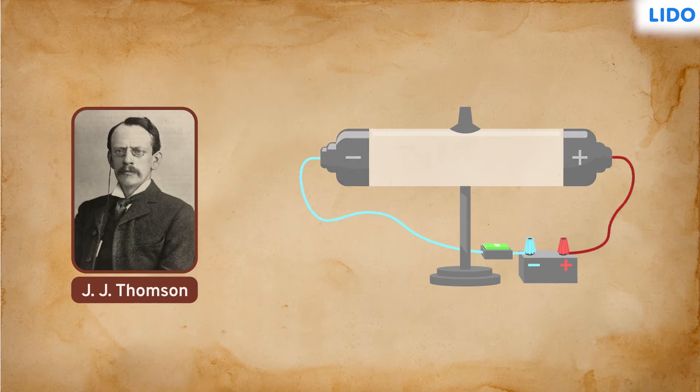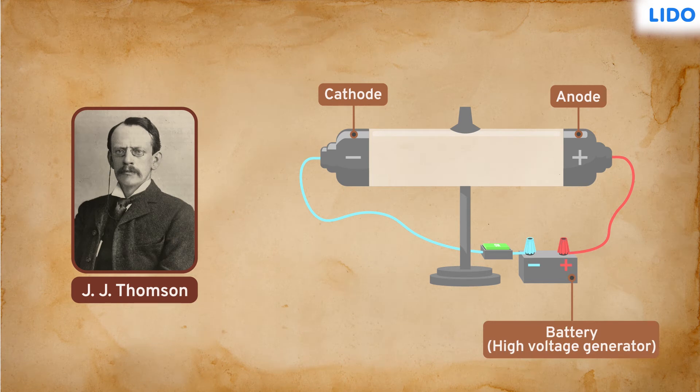One of the metal plates was connected to the positive terminal of a battery and is called the anode plate. The other was connected to the negative terminal and is called the cathode plate. The battery was used to produce high voltage inside the tube. A vacuum was created between the two plates to reduce the pressure inside the tube.